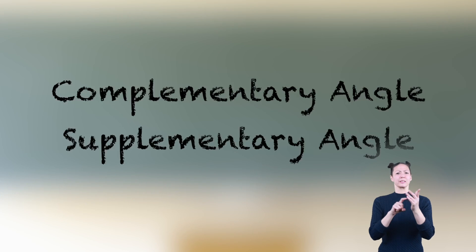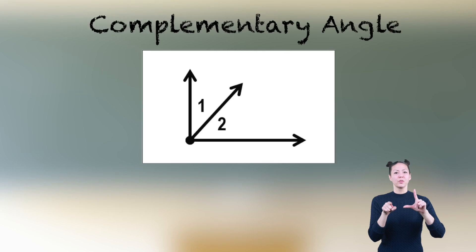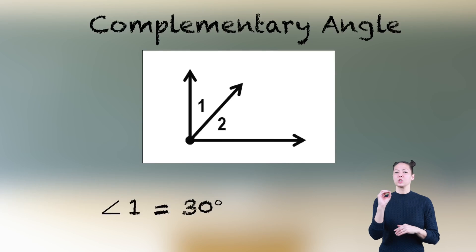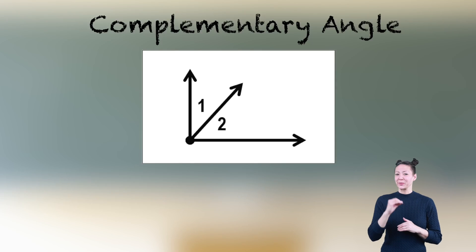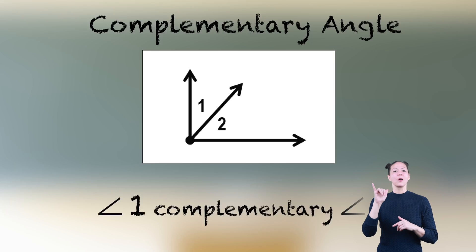Can you recognize the difference between supplementary and complementary angles? Angle 1 equals 30 degrees, and angle 2 equals 60 degrees. 30 plus 60 equals 90 degrees, so angle 1 is complementary to angle 2.